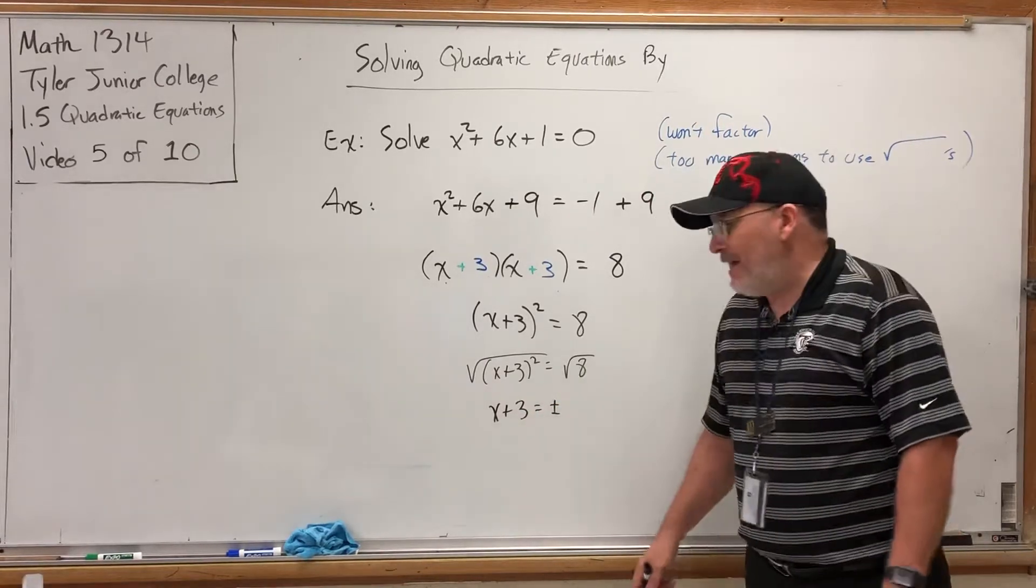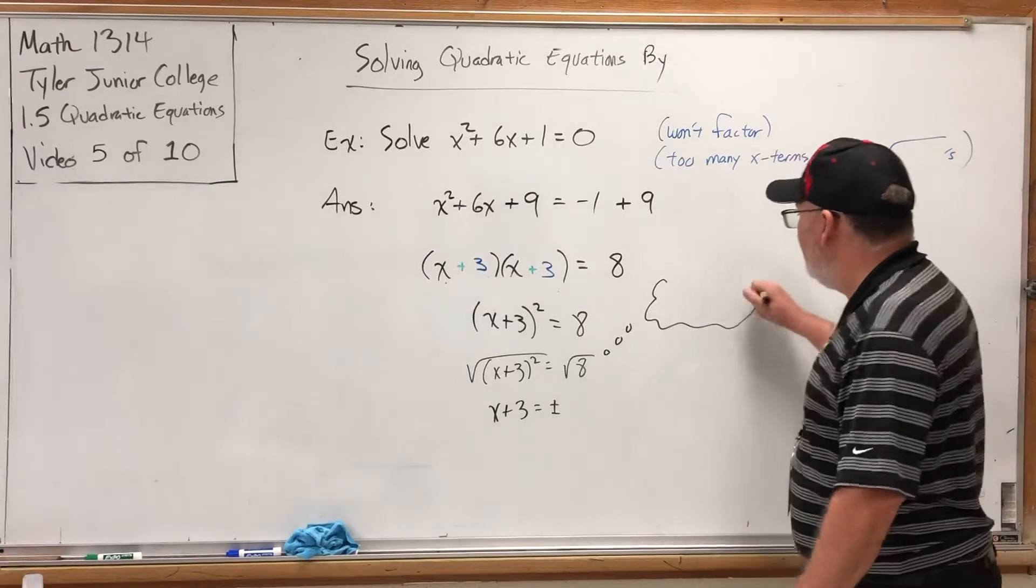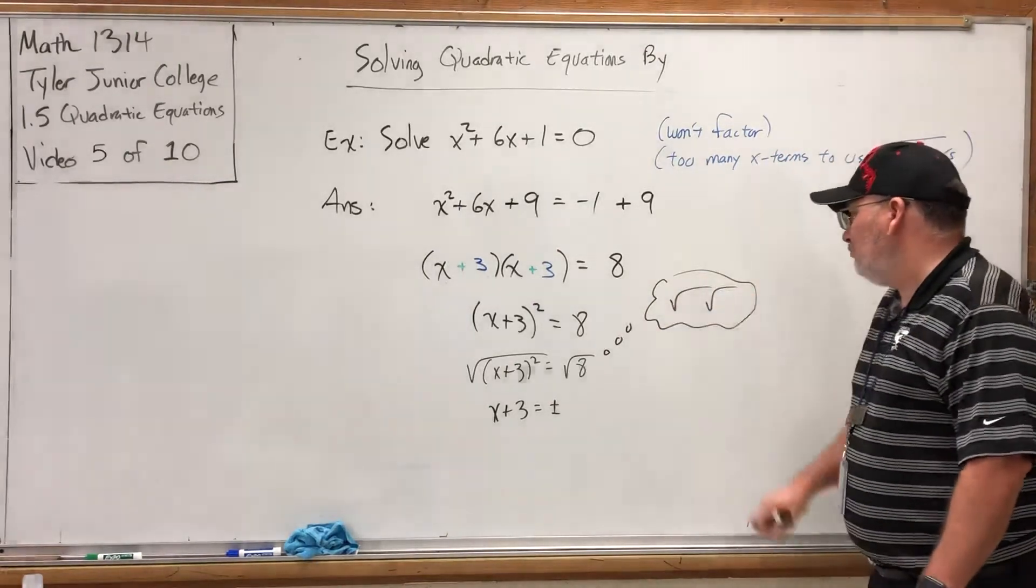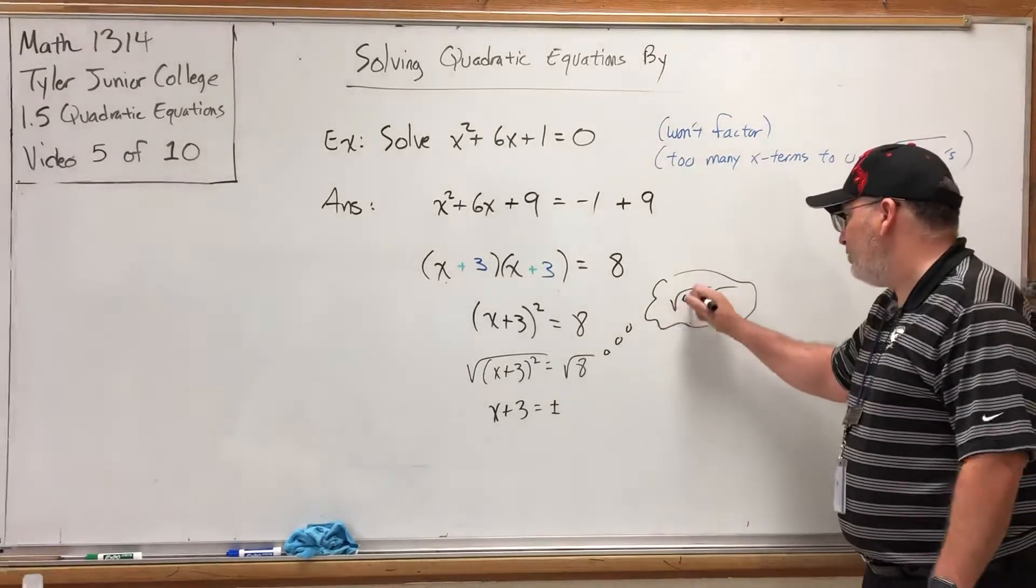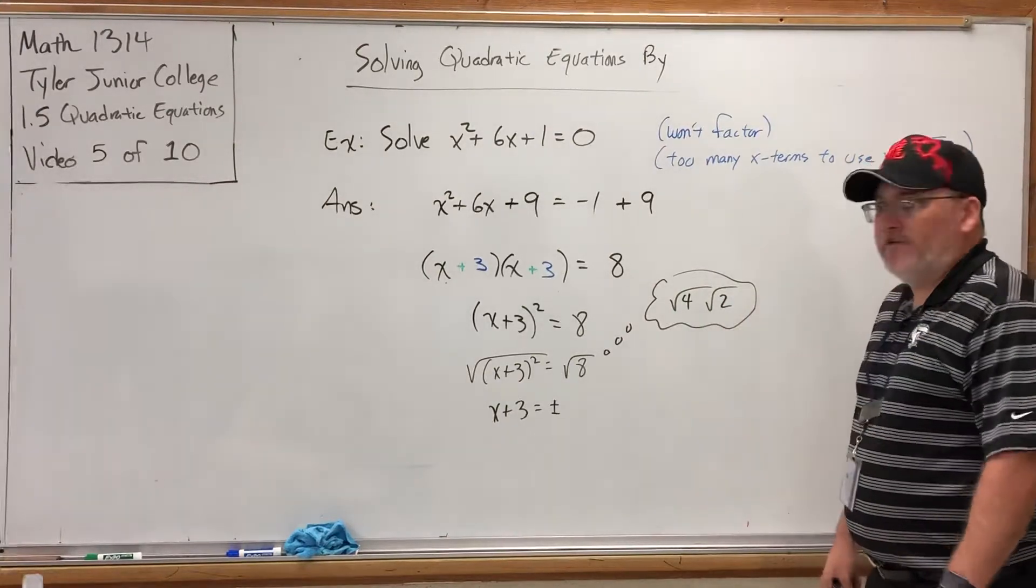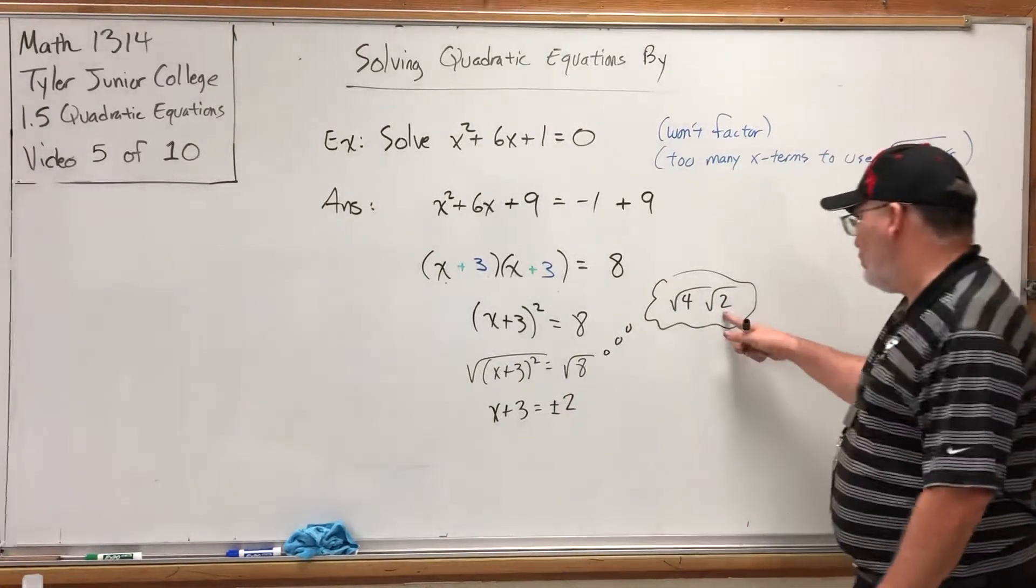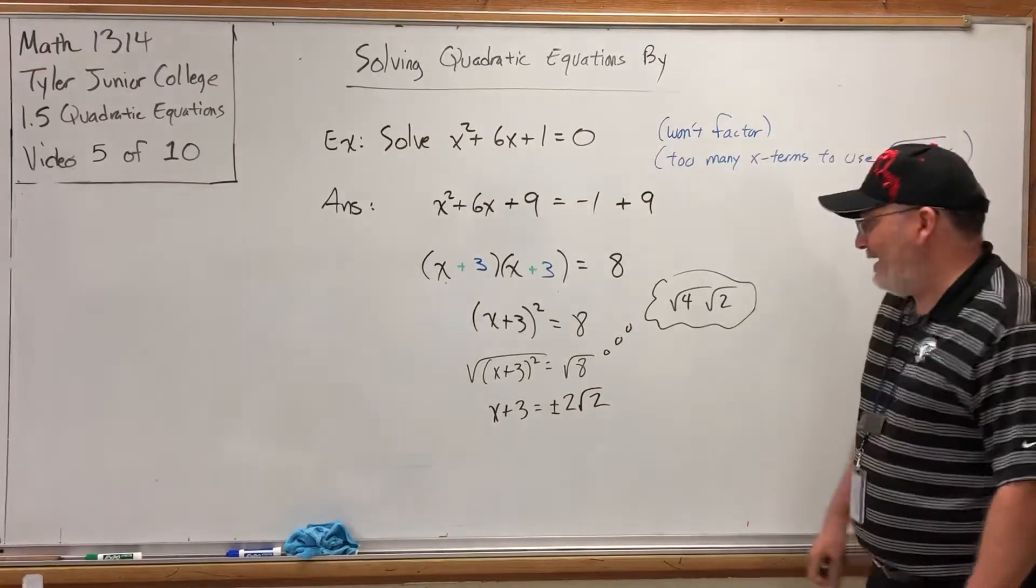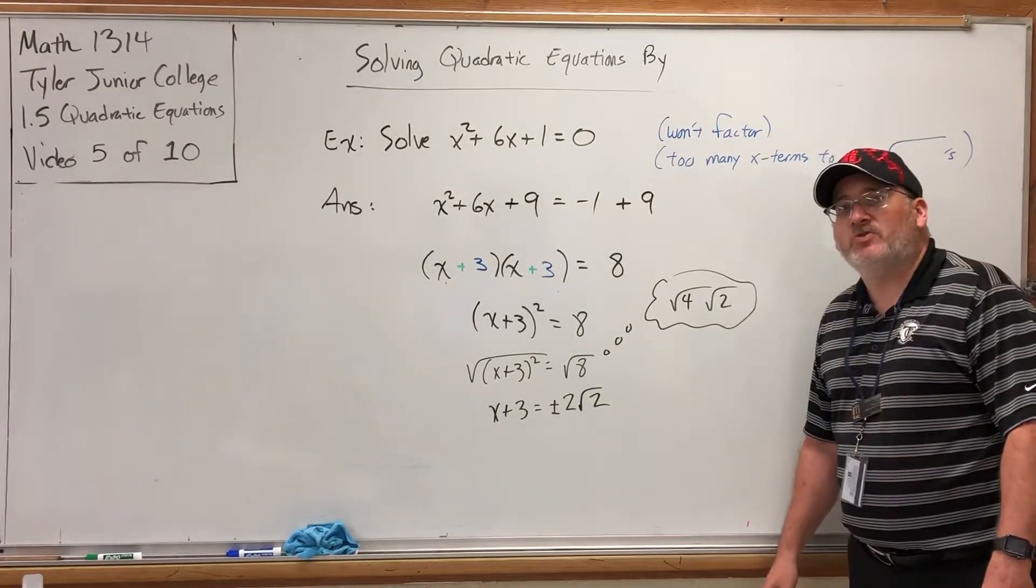Oh, look, the square root I have to simplify. Think about it. How can you split an 8? You don't have many options. 4 times 2 is good. The square root of 4 is 2. The square root of 2 I don't know, so I'm going to leave it alone. And I get x plus 3 equals plus-minus 2 square root of 2.